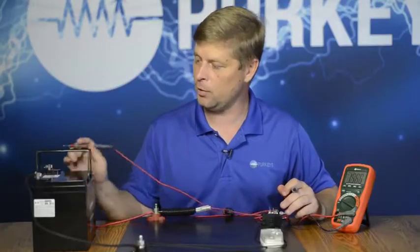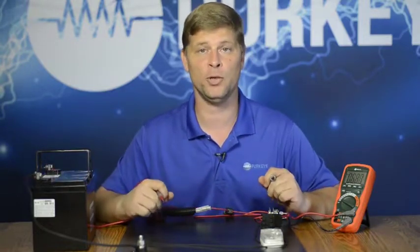All this voltmeter does is it saw 12.2 on red or on the positive and it saw zero at the negative. That's the only thing a voltmeter does: tell us the difference between two different points.